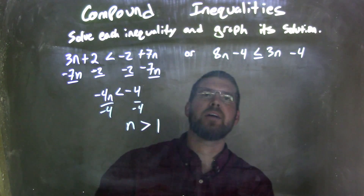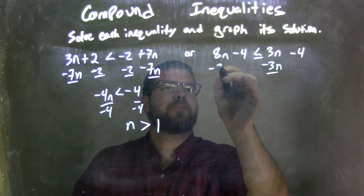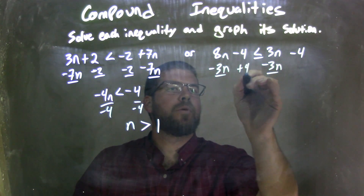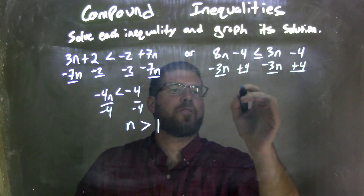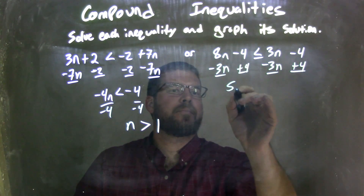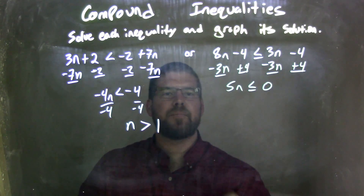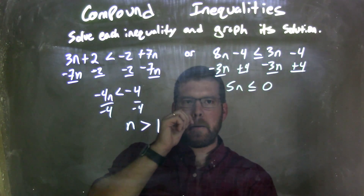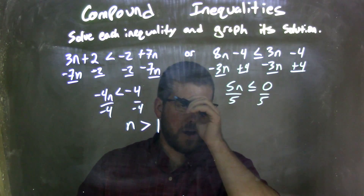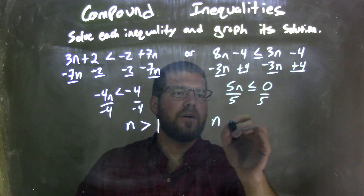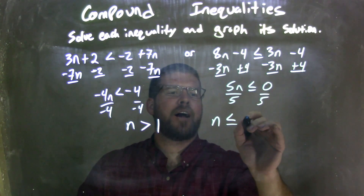Now I'll solve the second inequality. I'm going to subtract 3n from both sides and add 4 to both sides, giving me 8n minus 3n is 5n, which is less than or equal to negative 4 plus 4, which is 0. I then divide both sides by 5, and I'm left with n is less than or equal to 0.